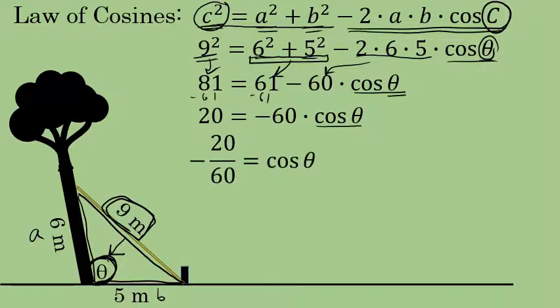Let's isolate the cosine of angle theta by dividing both sides by negative 60. I'll write this as a fraction: 20 divided by negative 60 is negative 20 sixtieths, which in lowest terms is negative one-third. So the cosine of angle theta is equal to negative one-third.